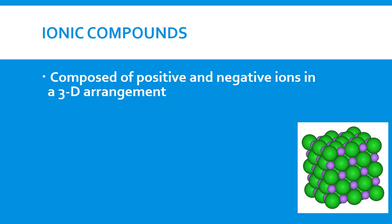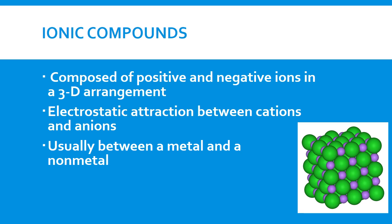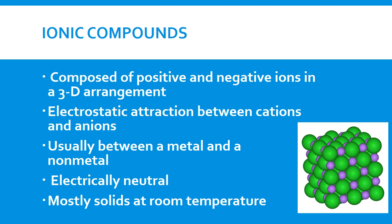Let's discuss ionic compounds. An ionic compound is composed of positive and negatively charged ions in a three-dimensional arrangement, held together by electrostatic attraction between the positive and negative charges. Remember, like charges repel and unlike charges attract. It's usually between a metal and a non-metal, and they are electrically neutral — meaning positive charges equal negative charges. They are also mostly solids at room temperature.